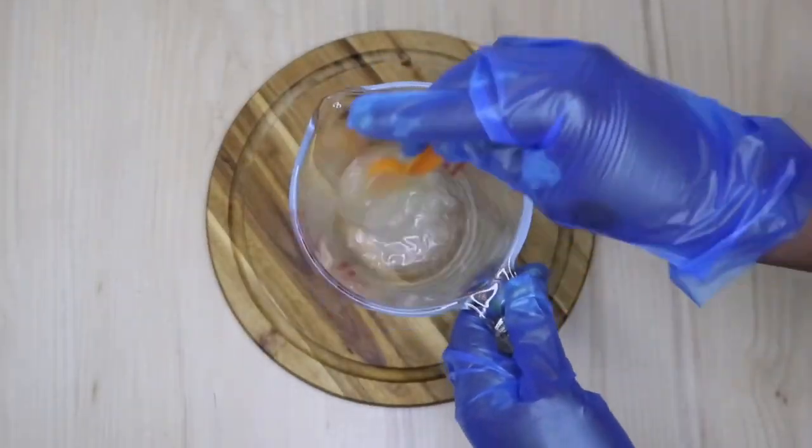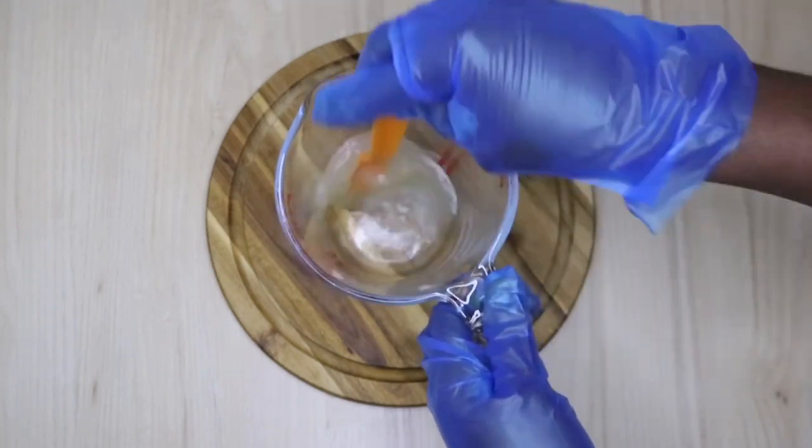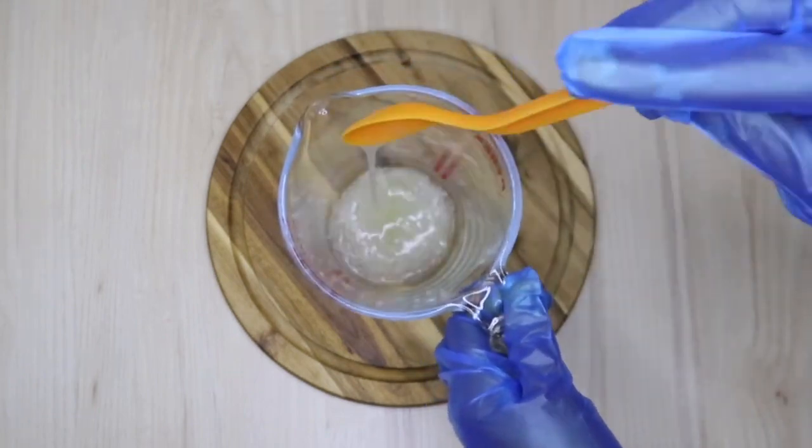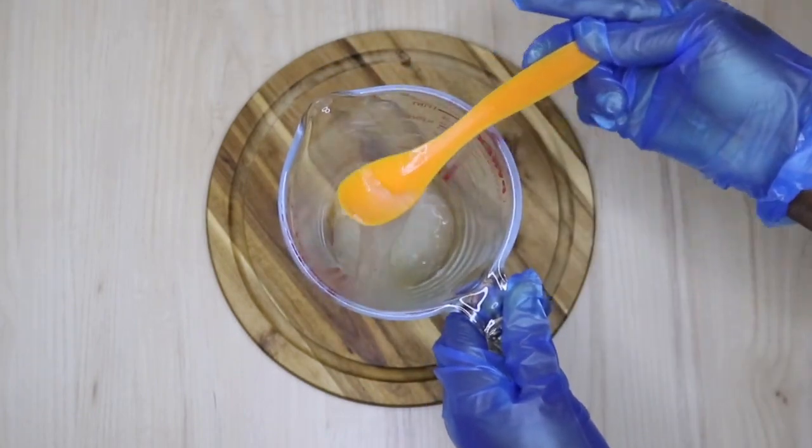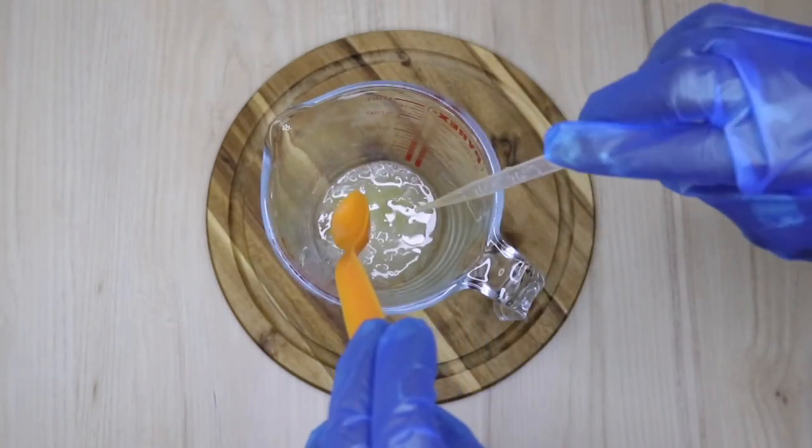You don't even need to sieve it because the gel will just break on its own. The only thing you will find maybe some chunks if you don't do it right. Just go ahead and remove those chunks of aloe vera gel.